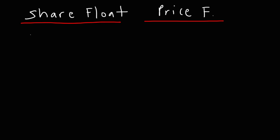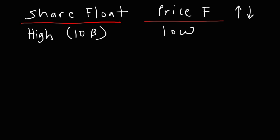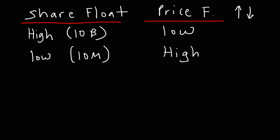If the share float number is very high — say a company has 10 billion shares available for trading — when the share float is very high, price fluctuations tend to be very low. The stock can go up or down, but it doesn't move much in terms of price. On the other hand, when the share float is relatively low — say 10 million shares or less — price fluctuations can be very high if people are buying or selling. It doesn't take much to move the price, so you have greater price fluctuations with companies that have a low share float.